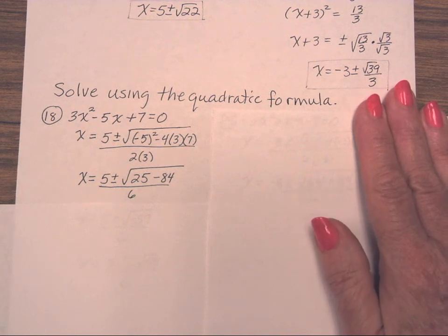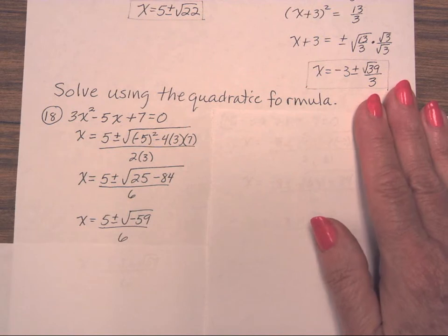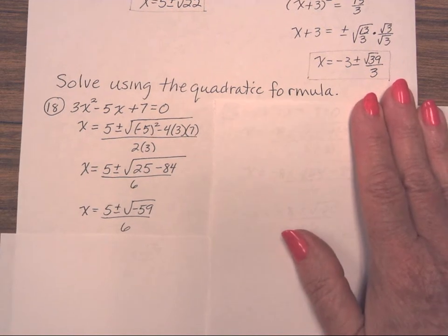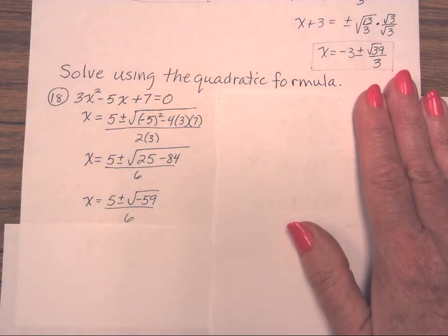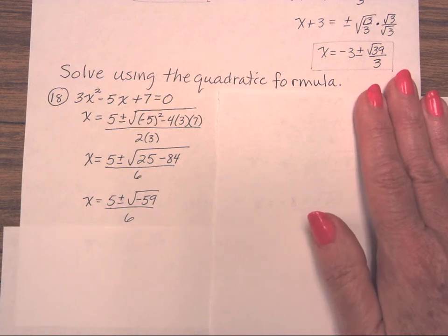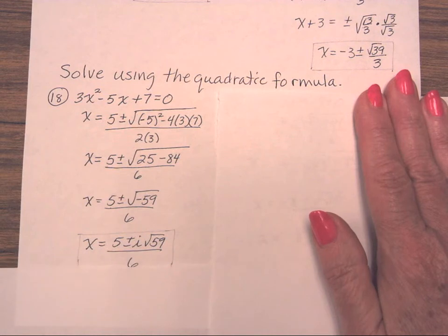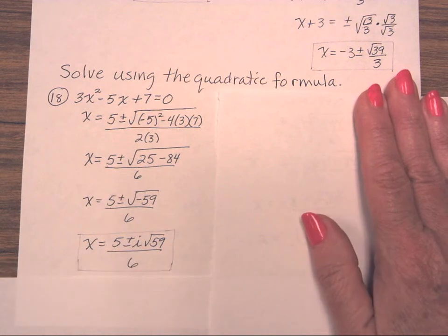You can never leave a negative under a radical — that is an imaginary value. It's going to come out as i and give you a complex solution. 59 cannot factor. Your final answer is 5 plus or minus i square root of 59, all over 6.